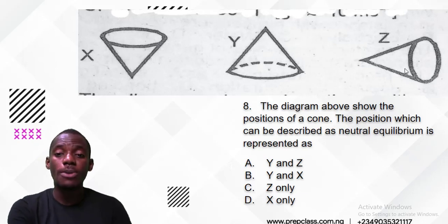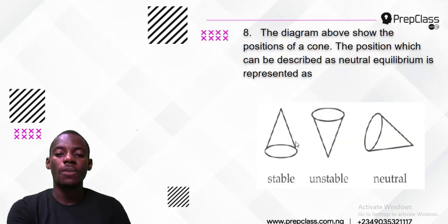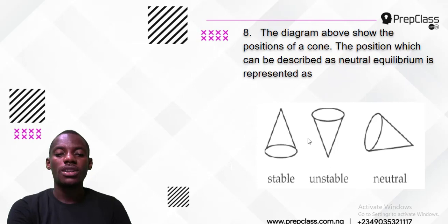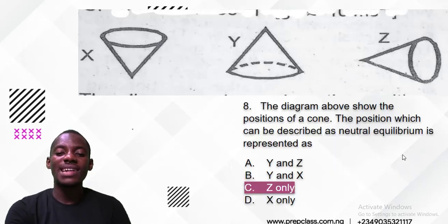So the answer is Z. This is unstable, this is neutral, so the answer is actually Z and that is the simple answer to the question.